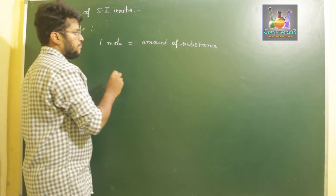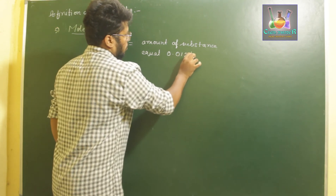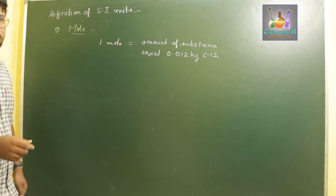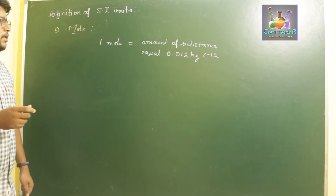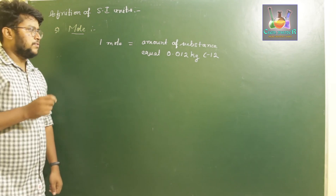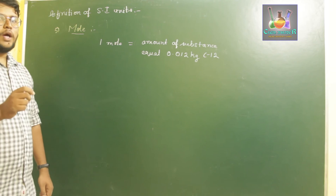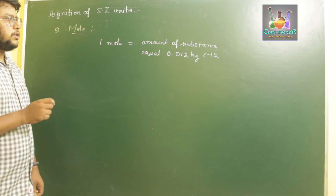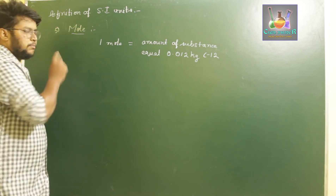One mole of a substance is said to carry an amount of substance equal to 0.012 kilograms of the C-12 isotope. If a substance has the same mass as 0.012 kilograms of carbon-12 isotope, that amount is said to be one mole. Carbon-12 isotope of 0.012 kilograms carries 12 atoms of carbon.